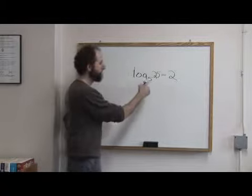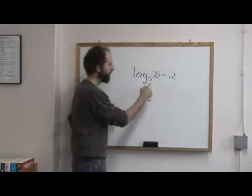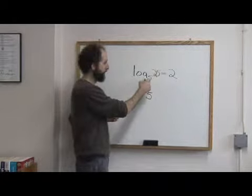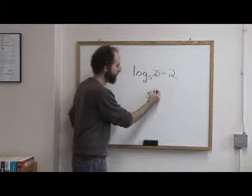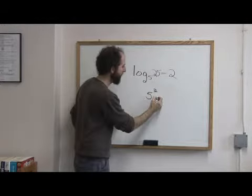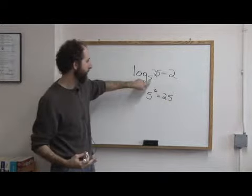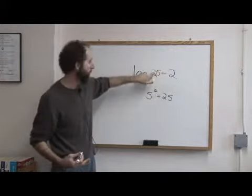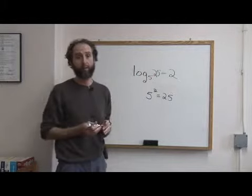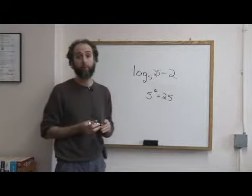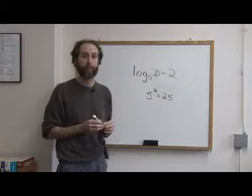What this really means is 5, the number that's the base, to the 2, 2 being the exponent, equals 25. That's what a logarithm really means. It means this number to this power equals that. That's how we read it. That's the foundation of logarithms.